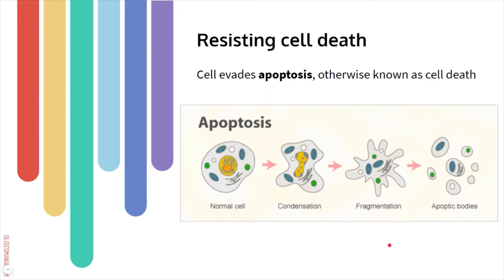The third hallmark is that cancer cells can often resist cell death. The process of a cell engaging its self-destruct mode is called apoptosis — programmed cell death where the cell sacrifices itself if it detects something is wrong. A normal cell that detects its DNA is damaged beyond repair, or is infected with a virus, will undergo apoptosis so that whatever damaged it can't be passed on to neighboring cells.